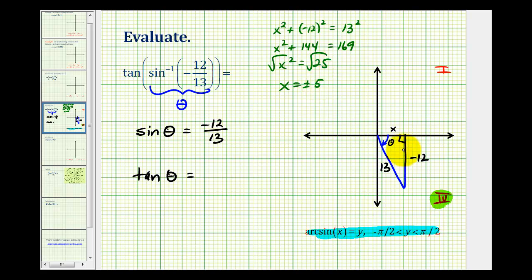But since we're in the fourth quadrant, the x coordinate would be positive. So this would be positive five.